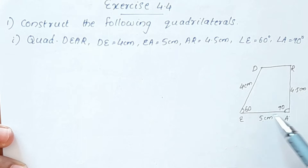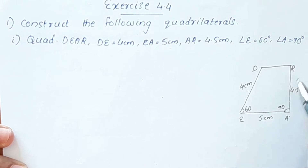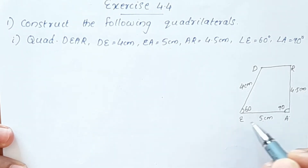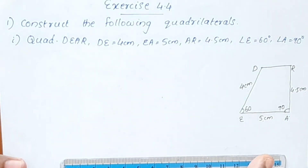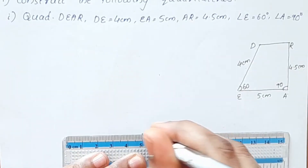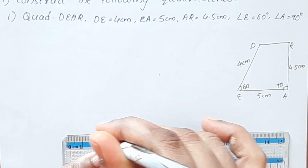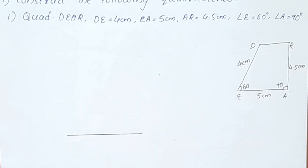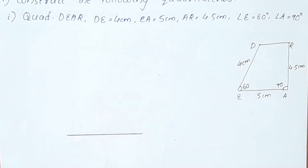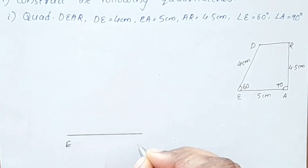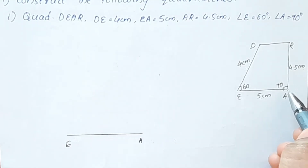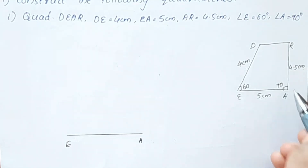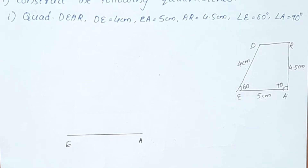We will draw EA. EA is 5 cm. Scale is 5 cm. I mark the paper with the pen. This is 5 cm — mark E and A. The angles at E and A are 90 degrees and 60 degrees respectively.